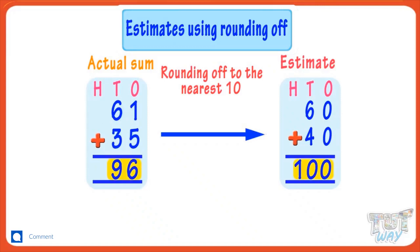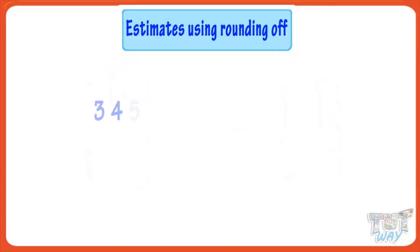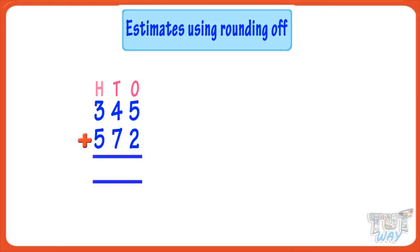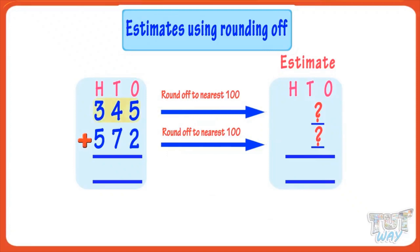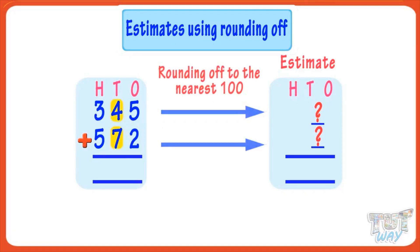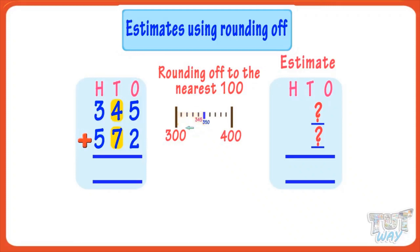Let's take another example. We have to add 345 and 572. We will make a quick estimate rather than actually adding these numbers, by rounding off to the nearest hundred. For rounding off numbers to the nearest hundred, we see the tens digit. If it's less than five, we round it down, and if it's greater than or equal to five, we round it up to the next hundred.